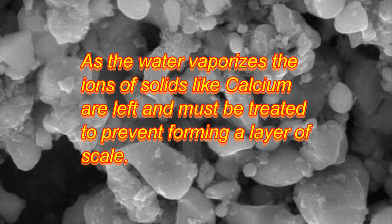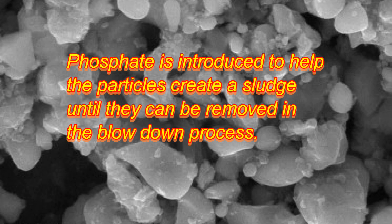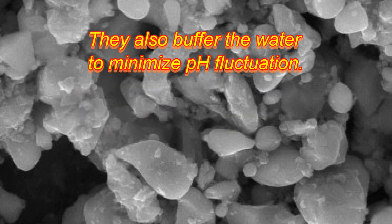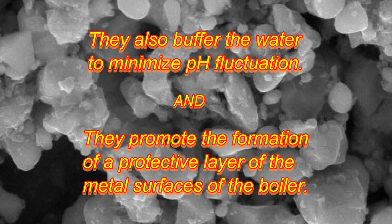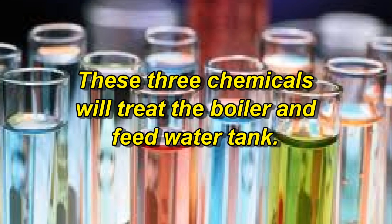The calcium ions are controlled by using a phosphate conditioner, often called a sludge conditioner. When introduced to the boiler, it creates a sludge that is removed in the blowdown process. Phosphates also buffer the water, minimizing any pH fluctuation, and they enhance the formation of a protective layer on the steel surfaces of the interior of the boiler. These three chemicals comprise the chemical program for protecting the boiler.